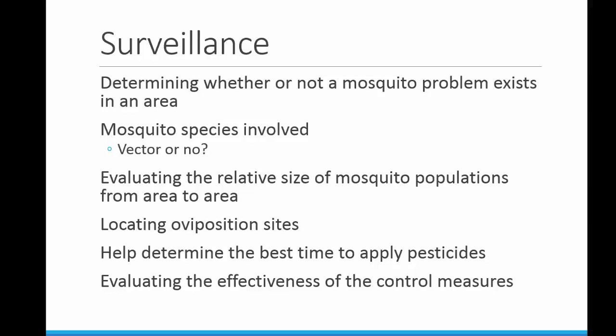The first is to determine whether or not a mosquito problem exists in an area. Next, we're going to determine what mosquito species is involved and whether or not we know that mosquito to be a vector of human disease. Next, we're going to evaluate the relative size of the mosquito population from area to area. It also allows you to locate oviposition sites, and these are the areas in which the females lay their eggs.